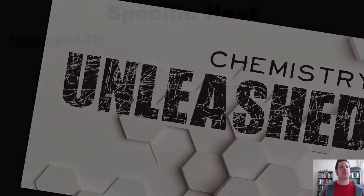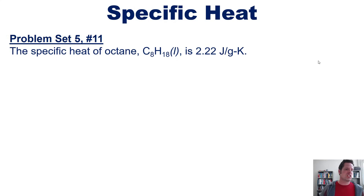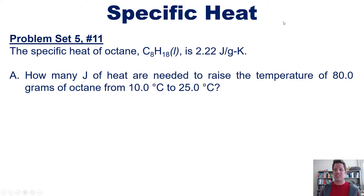We have this additional problem from my student's homework set. The specific heat of octane, C8H18, is 2.22 J/g·K. With that in mind, how many joules of heat are needed to raise the temperature of 80 grams of octane from 10°C to 25°C?